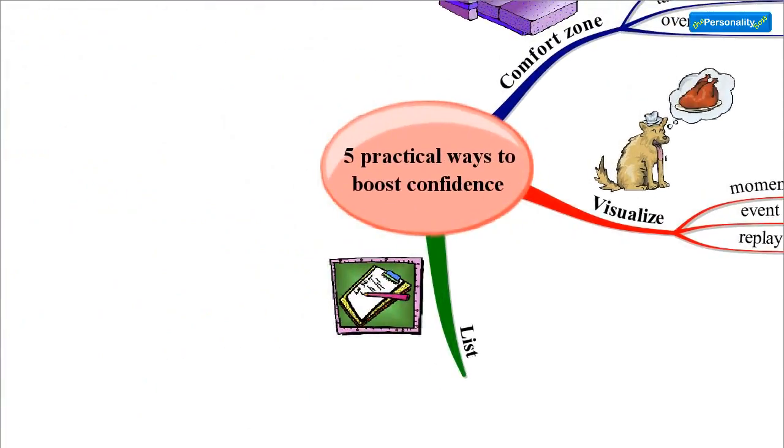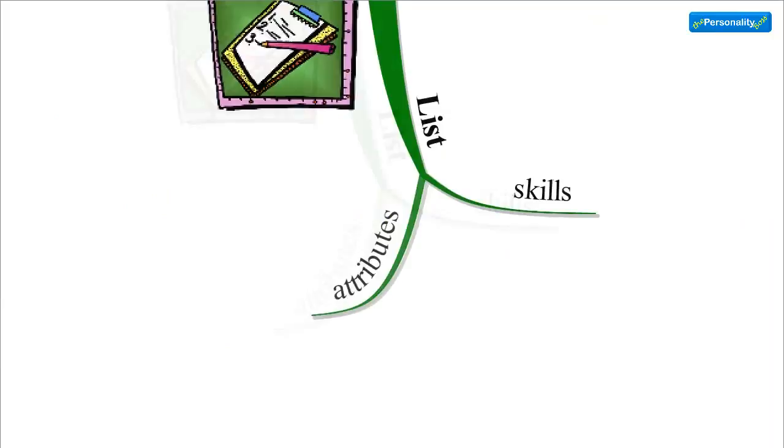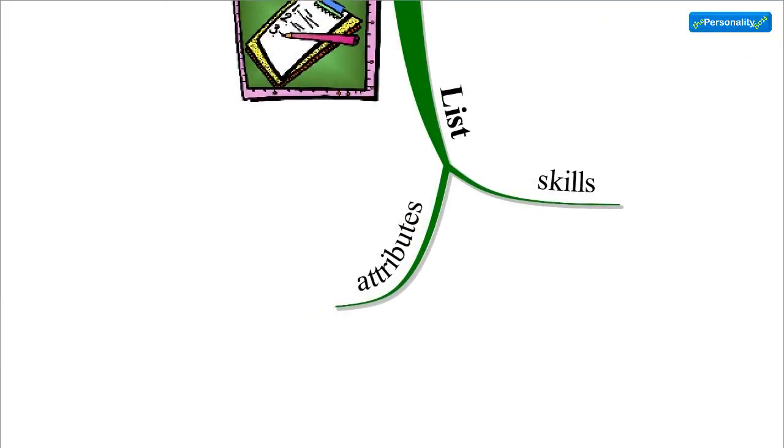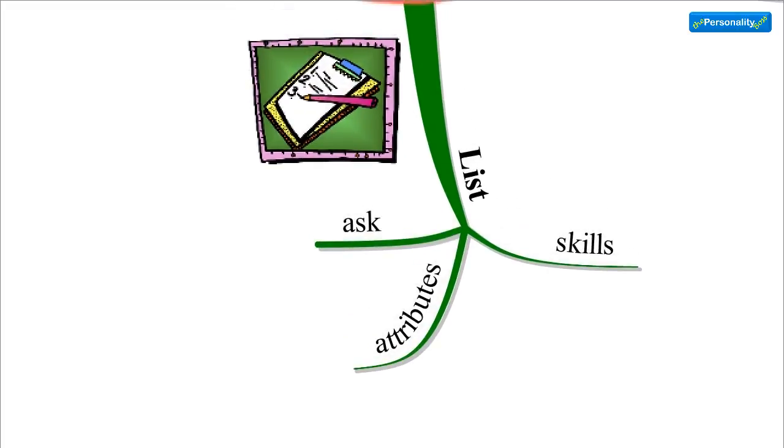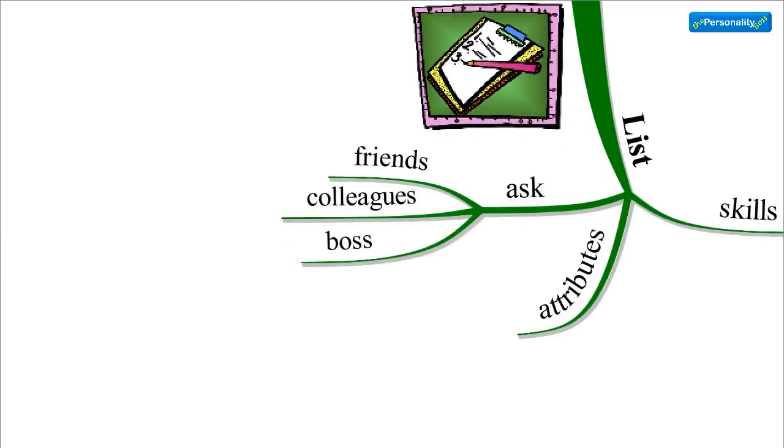Number three: make a list. Write down all your skills, your attributes. Brainstorm everything you can think of. Keep this list somewhere where you can see it easily every day. Also ask some of your friends, your colleagues, and perhaps even a boss to tell you what they appreciate about you. If they tell you things that are not on your list, add them to your list.